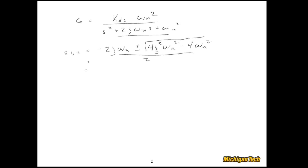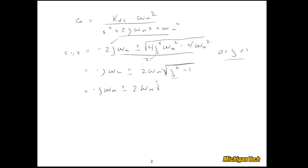Now I'll assume for this analysis that ζ is between 0 and 1 — so ζ is less than 1 but it's positive. Let me simplify a bit more. We have negative ζωn by canceling those two 2s. Then factoring out 2ωn, we're left with ζ squared minus 1. Since ζ is less than 1, ζ squared is going to be less than 1, so we have a negative quantity within the square root. Rewriting: the poles are negative ζωn plus or minus ωn·√(1 − ζ²)·j.